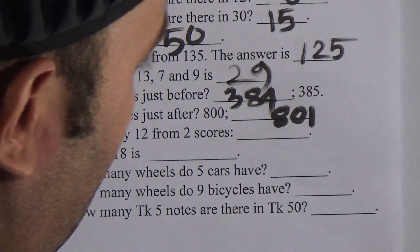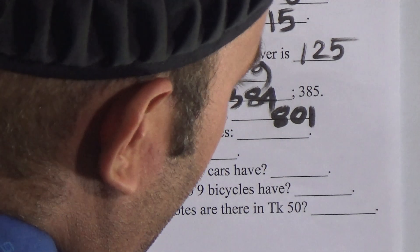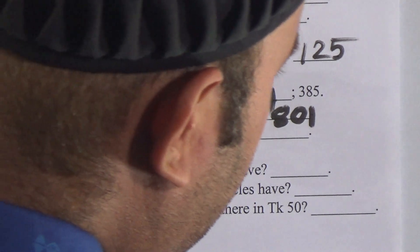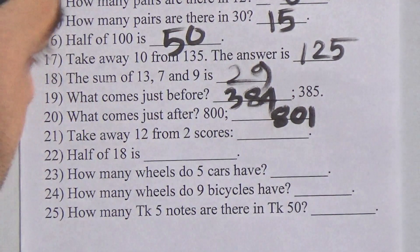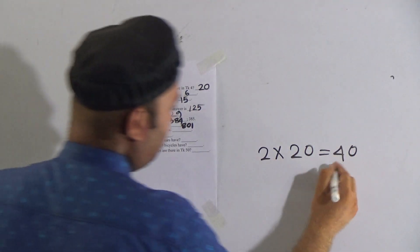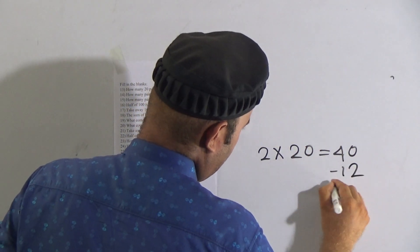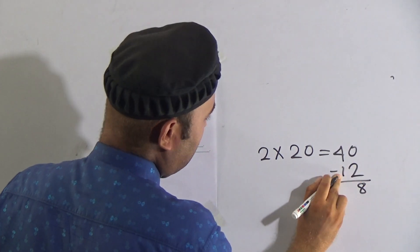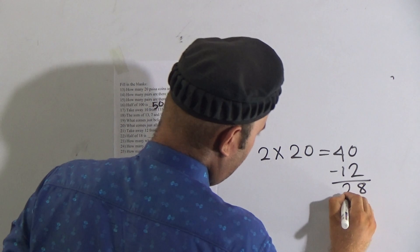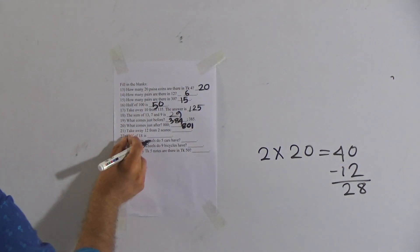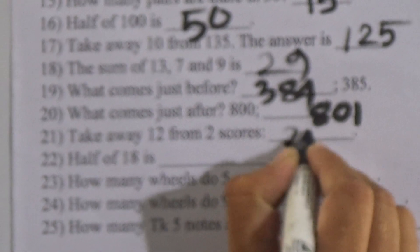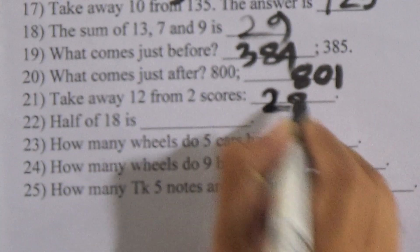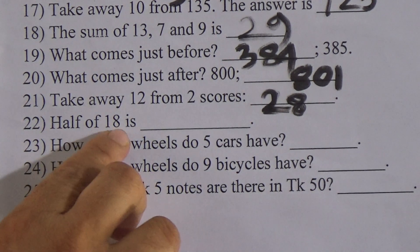Take away 12 from 2 scores. We know that 2 scores means 2 multiplied by 20, which equals 40. Now subtracting 12 from 40: 2 from 10 is 8, carry 1, and 1 plus 1 from 4 is 2. So take away 12 from 2 scores is 28.